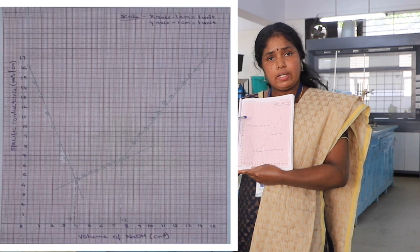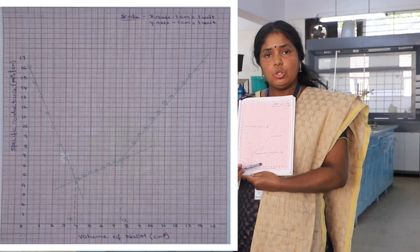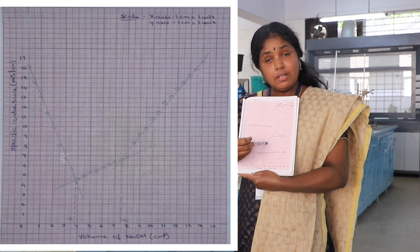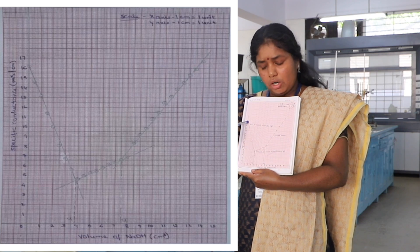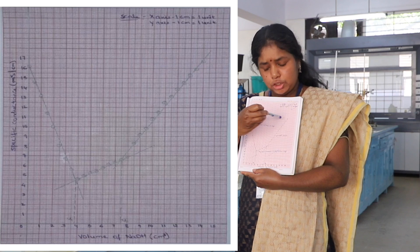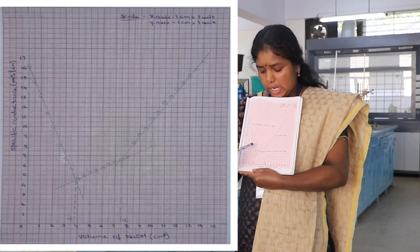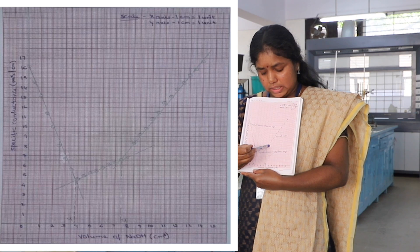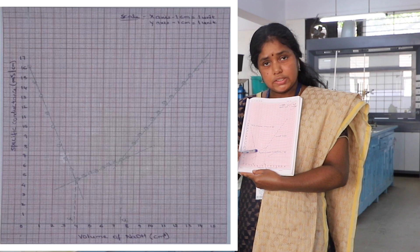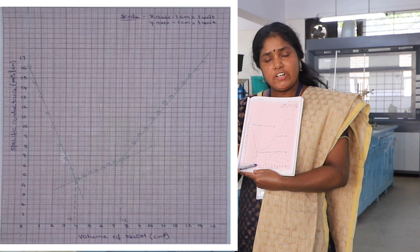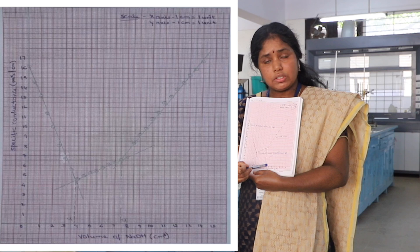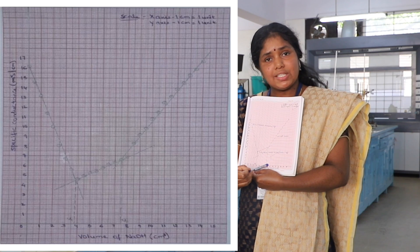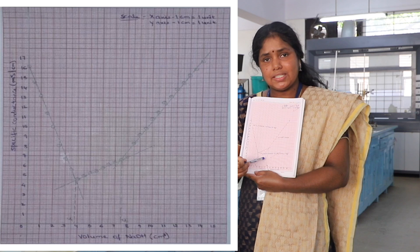If you plot a graph of specific conductance versus volume of base added, you will get points distributed across the graph. We should not draw any freehand curve — we must draw three straight lines covering the maximum number of points, giving two points of intersection. From these intersections, find the volume of base required to neutralize the strong acid HCl, and the volume required to neutralize both acids. The difference between the second and first volume gives the amount of base needed to neutralize the weak acid, acetic acid.